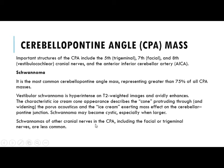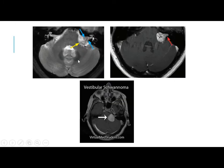Schwannomas of other cranial nerves in the CP angle including facial and trigeminal are less common. On axial T2-weighted imaging, we can see a well-defined mass with cone shape and ice cream appearance — the cone causing widening of the porus acousticus and the ice cream causing indentation of the cerebellopontine junction. T1 with contrast shows a non-homogeneous enhancing mass in the left CP angle, also causing widening of the porus acousticus.